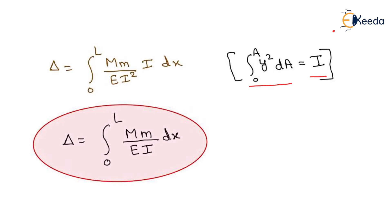After substituting I, we obtain the final expression: deflection equals the integration from 0 to L of mM upon EI dx. This is the formula for finding the deflection of a particular joint as per the virtual work method or unit load method.